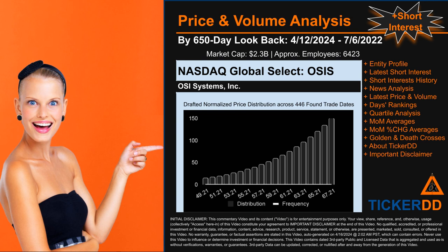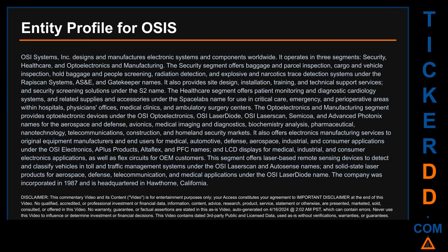Hello, my name is Carl. I searched the public web to find information about the company behind this ticker. Here is what I found. OSI Systems Inc. designs and manufactures electronic systems and components worldwide. It operates in three segments: security, healthcare, and optoelectronics and manufacturing. The security segment offers baggage and parcel inspection, cargo and vehicle inspection, hold baggage and people screening, radiation detection, and explosive and narcotics trace detection systems under the Rapiscan Systems, AS&E, and Gatekeeper names.